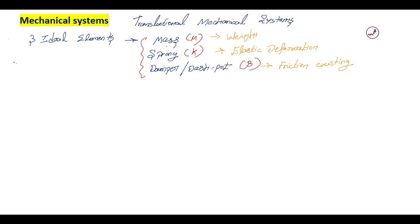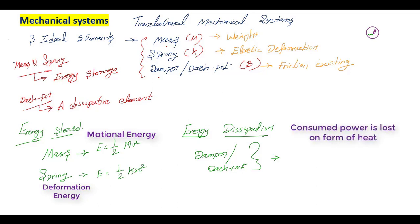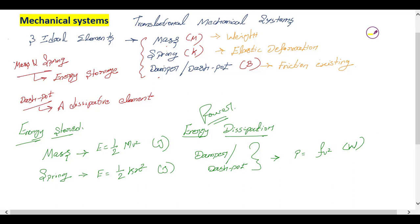Mass and spring are both energy storage elements — energy can be stored or retrieved without loss. The damper is a dissipative element. The energy stored in the mass element is kinetic energy: E = ½mv². In the spring, the energy stored is potential energy. The energy dissipated in the damper is represented as P = fv² (in watts). We must understand how these three basic ideal elements are represented mathematically before applying theorems and laws to design the transfer function.